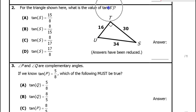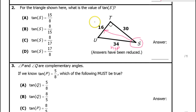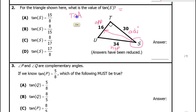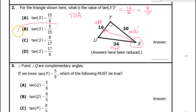Problem number two: what is the tangent of s? The hypotenuse is identified, and if we're talking about angle s, we circle it. Across from angle s is the opposite leg, and the leg close to angle s is adjacent. Tangent, abbreviated TOA, is opposite over adjacent, so that's 16 over 30. Both are divisible by 2, giving 8 over 15.